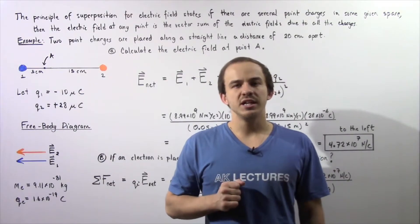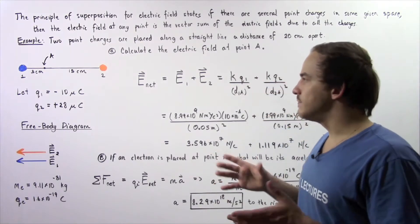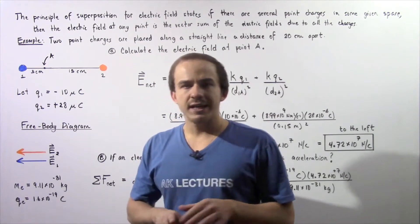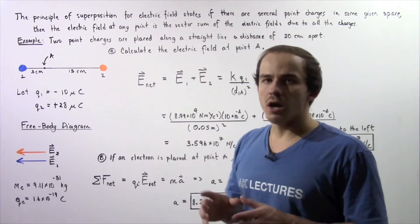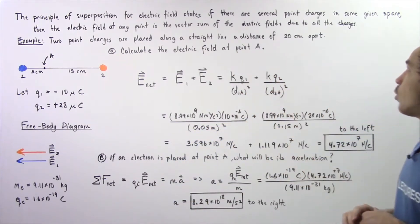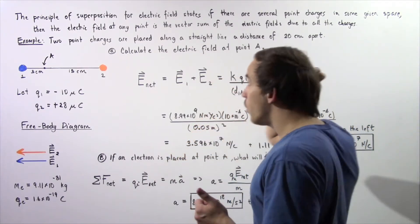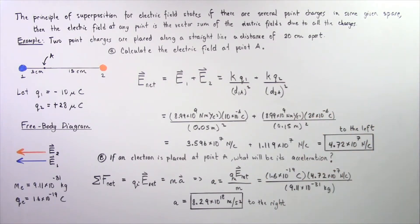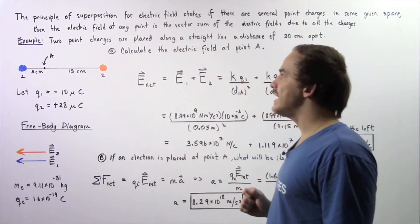Let's look at the following example in which we're going to calculate the net electric field at a given point due to two other stationary point charges. Before we begin, let's recall the principle of superposition for electric fields. It basically states that if there are several point charges in some given region of space, then the electric field at any point is the vector sum of the electric fields due to all the other charges, because electric field, just like force, is a vector.